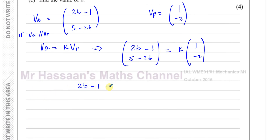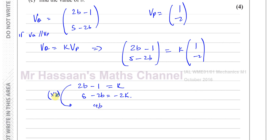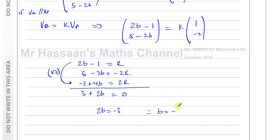To eliminate k, I multiply the first equation by 2: 4b minus 2 equals 2k. Adding this to the second equation (5 minus 2b equals minus 2k), the 2k terms cancel. This gives 4b minus 2 plus 5 minus 2b equals 0, so 2b plus 3 equals 0. Wait — adding: (4b minus 2) plus (5 minus 2b) equals 2b plus 3 equals 0, giving 2b equals minus 3, so b equals minus 3/2.